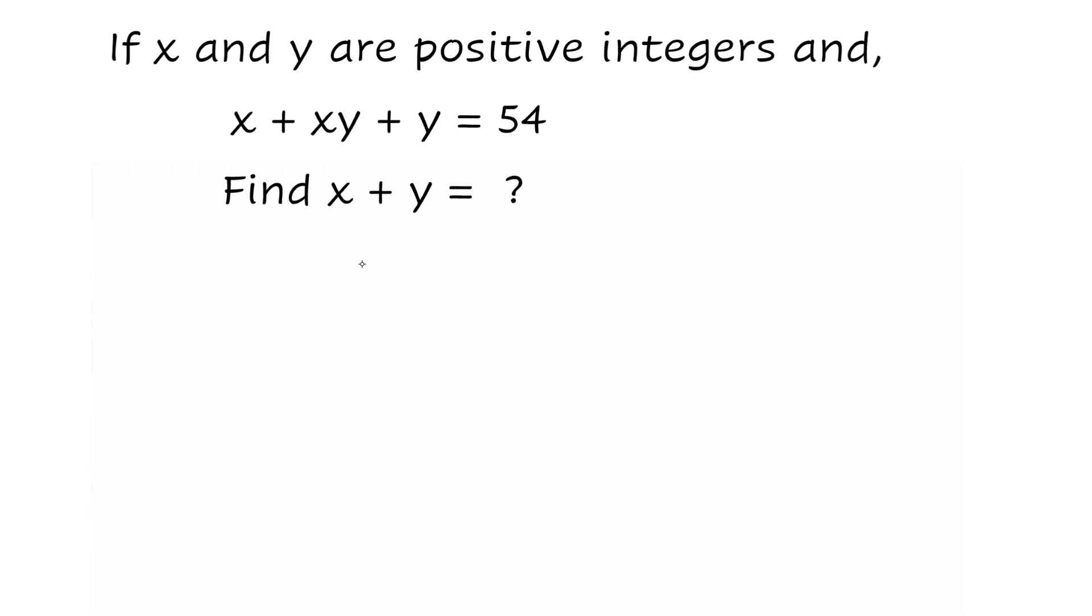In this question we are given x + xy + y = 54. This is an equation in two variables and as a second information we have been given that x and y are positive integers, that is they are not zero and not negative.